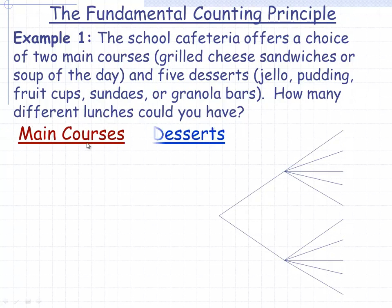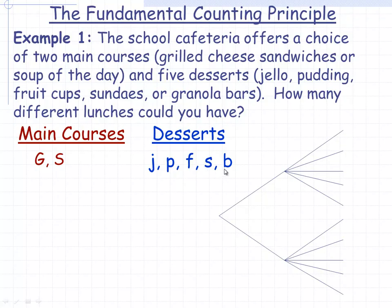I'm going to use some abbreviations to represent the main courses and desserts so we don't have to write out the words every time. Capital G will represent grilled cheese sandwich and capital S, soup of the day. The desserts will use a lowercase letter: J for Jell-O, P for pudding, F for fruit cup, S for sundae, and B for granola bar.